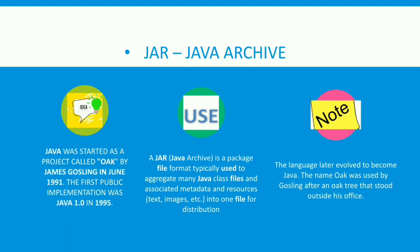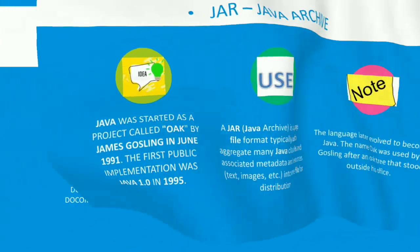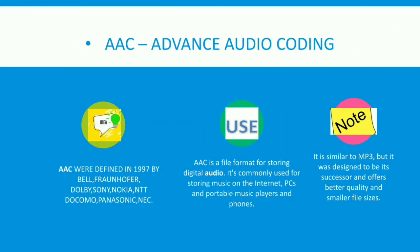The sixth topic is AAC — Advanced Audio Coding. AAC was defined in 1997 by Bell, Fraunhofer, Dolby, Sony, Nokia, NTT Docomo, Panasonic, and NEC. AAC is a file format for storing digital audio, commonly used for storing music on the internet, PCs, portable media players, and phones. It is similar to MP3, but was designed to be its successor, offering better quality and a smaller file size.